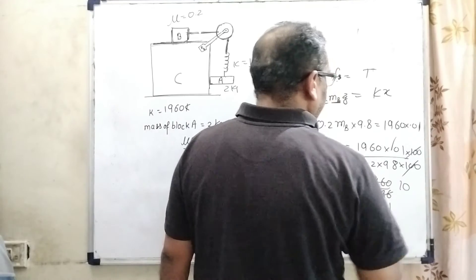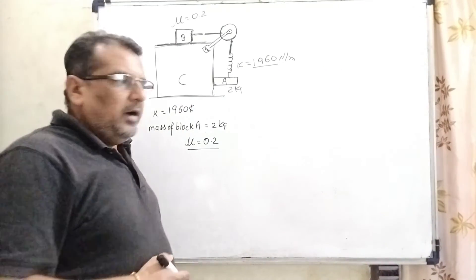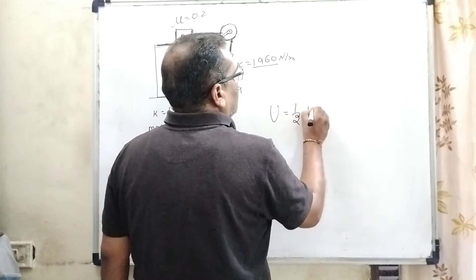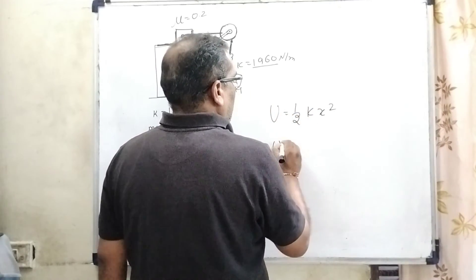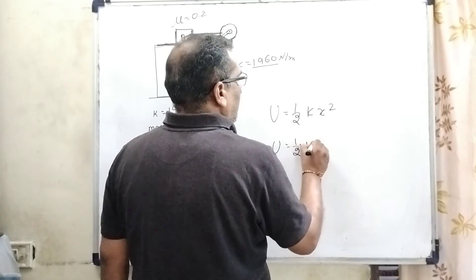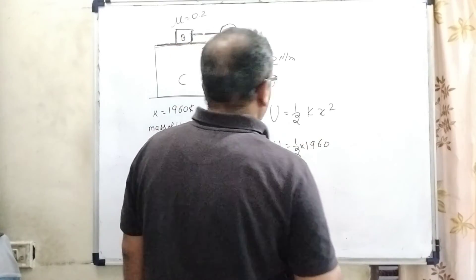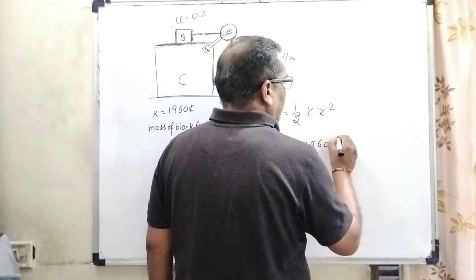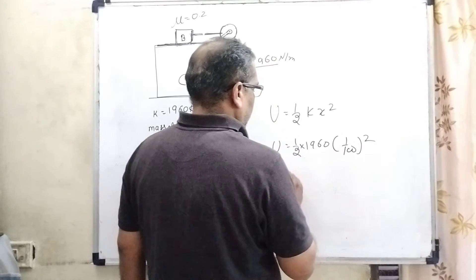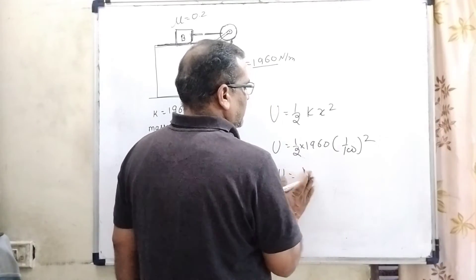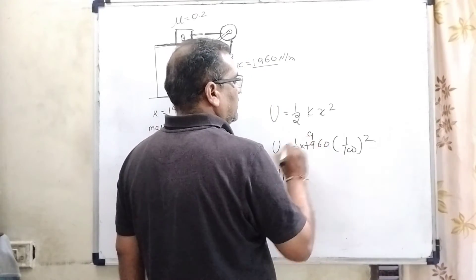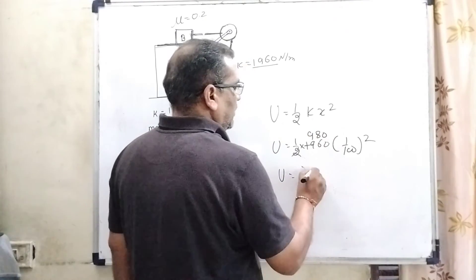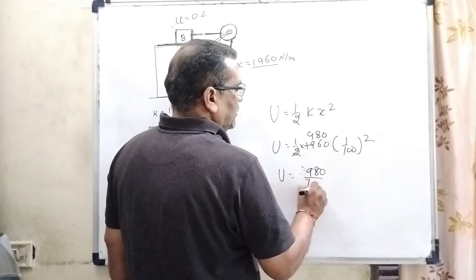Now third part: energy stored in the spring, that is U equals 1 by 2 K x squared. What is the value of K? 1960. And x is 0.01, or it can be written as 1 by 100, and it's squared. So 1 by 2 cancels with 1960 to give 980, and dividing by 10000.